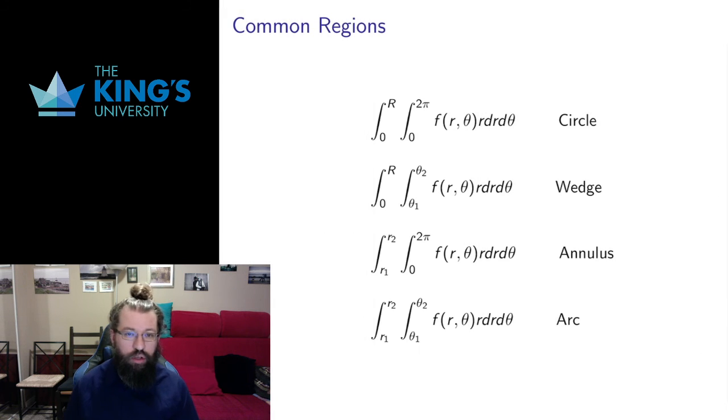Let me talk about common regions of integration where polar coordinates are useful. Obviously if I want to integrate over a circle, then polar coordinates are going to work very well. They're based on circles. For a circle of radius R, the bounds will be radius from 0 to R and the angle will go all the way around. That will give me a full circle. I can only go a portion of the way around and that will give me a wedge-shaped region.